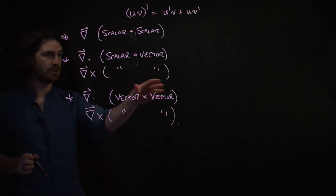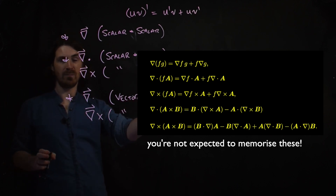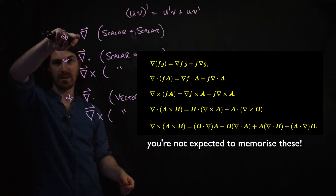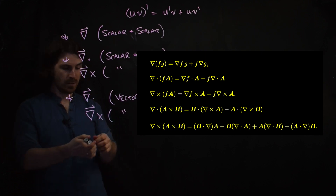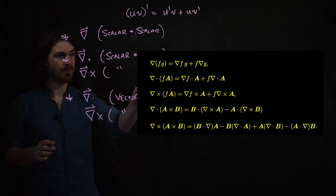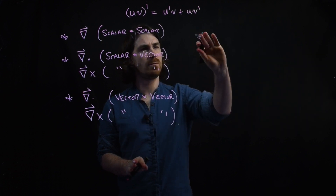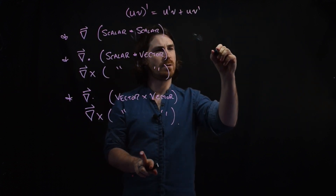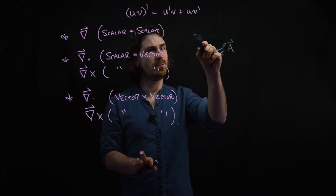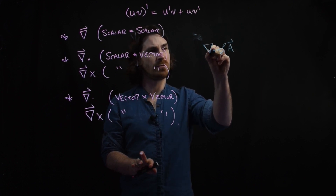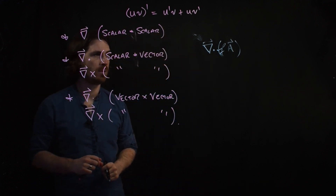The identities that result are shown on the right hand side here. You can prove any of these by just writing down the definition of nabla and using the product rule for differentiation. So let's do that for the second one, which is the scalar times vector case: a scalar function f times a vector a. We want to find the divergence of f times a.